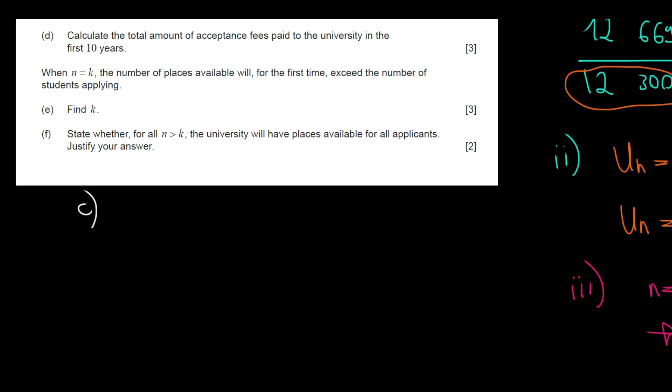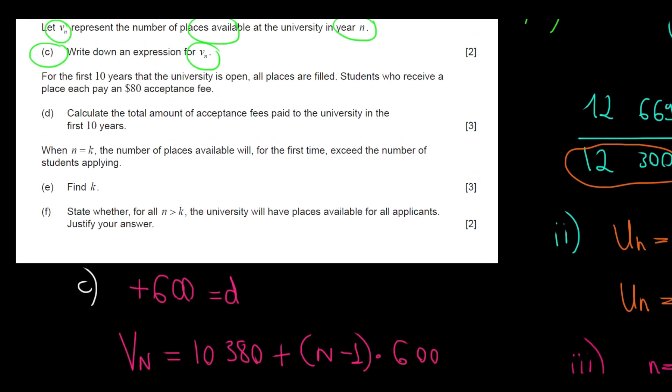Because the growth is linear. We increase not by a percentage value, but by a number value, which is plus 600 per year. So this is what we call our common difference. The formula will be the first term, which in our case is 10,380, plus N-1 times the common difference of 600. That's going to be it. So this is the expression that we wanted.